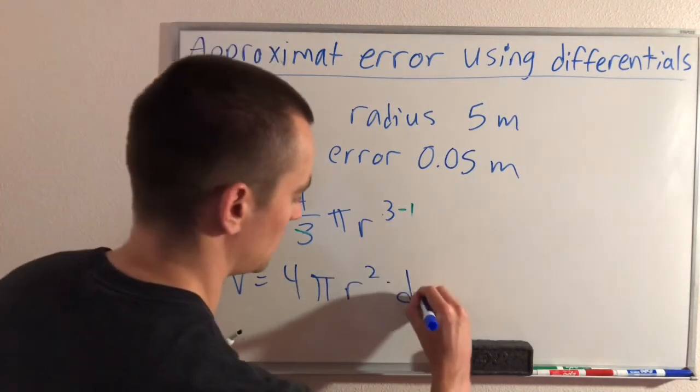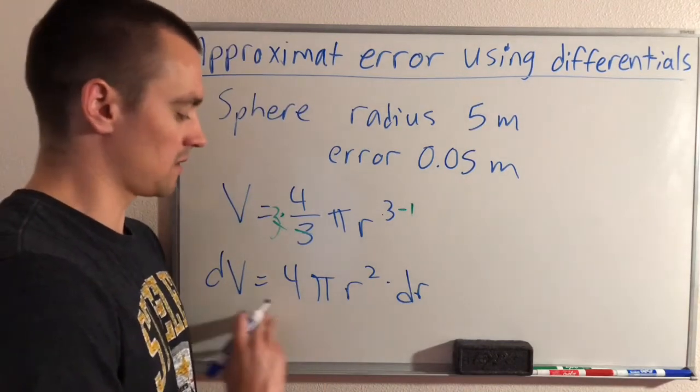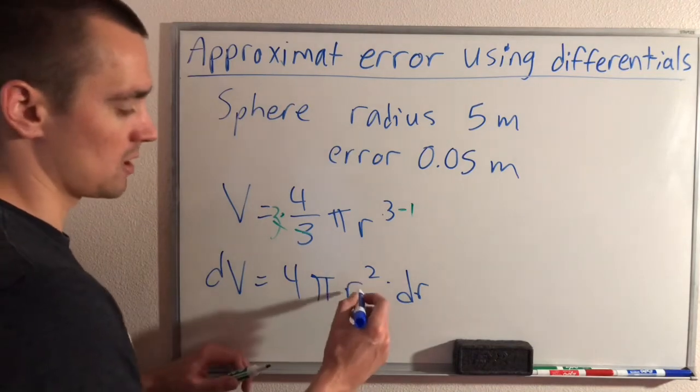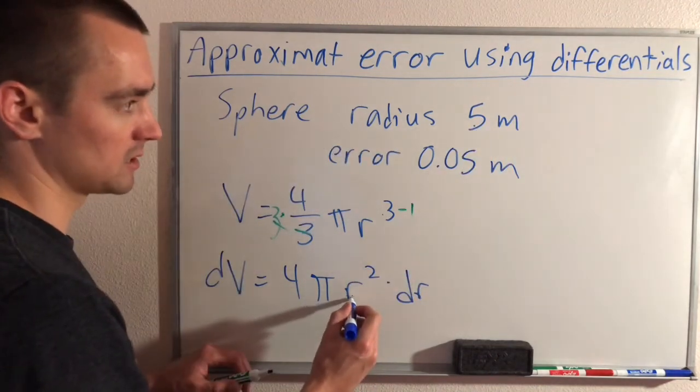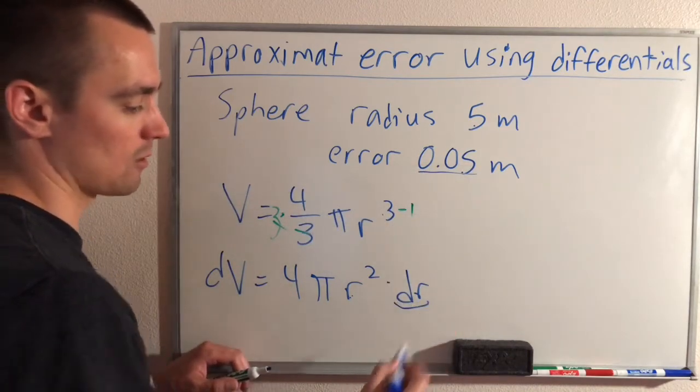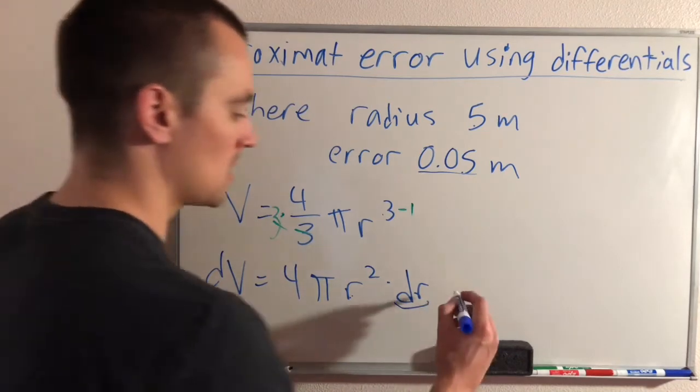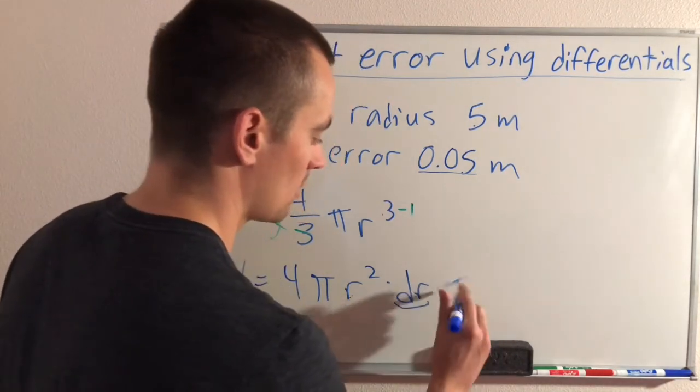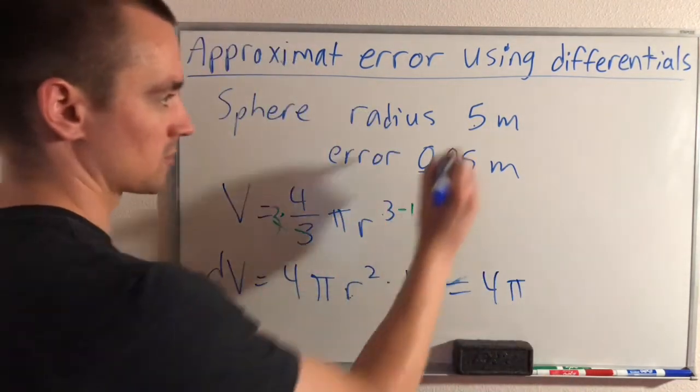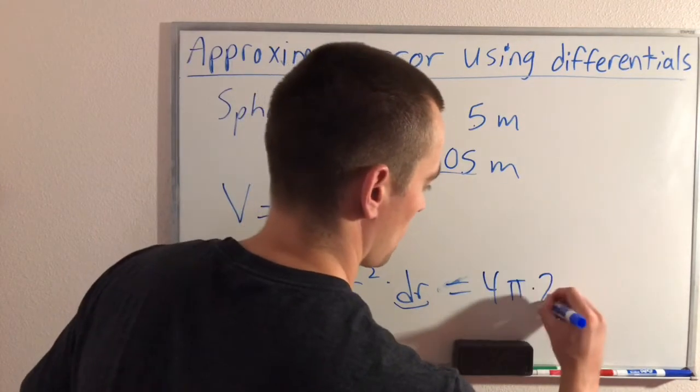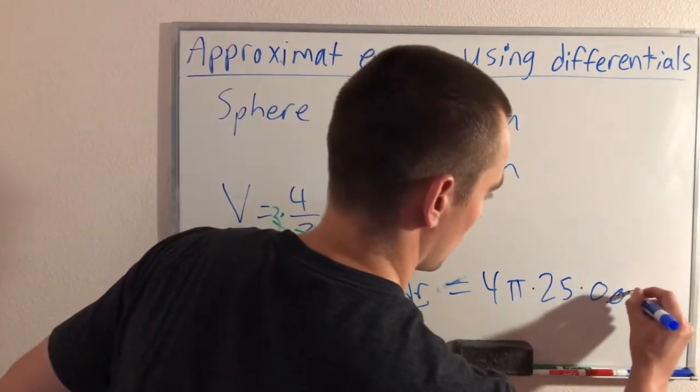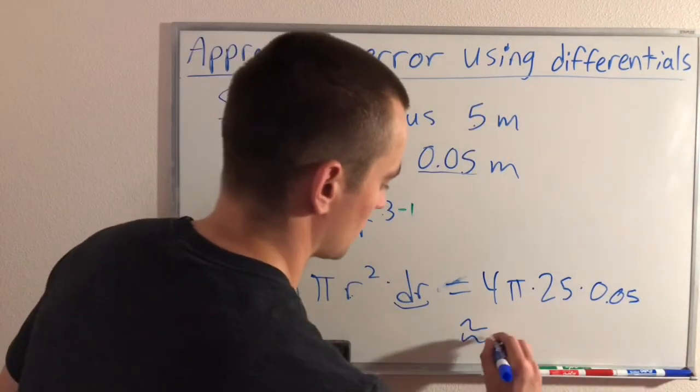So this is dV, and then we multiply this by dr. To estimate the maximum possible error that could be in our volume, all we have to do now is plug in what we know: we measured a radius of five meters and our error could be up to 0.05 meters, which is what we'll put for dr. Plugging all that in, we end up with four times pi times r squared, which is 25, and then times dr, which is 0.05.